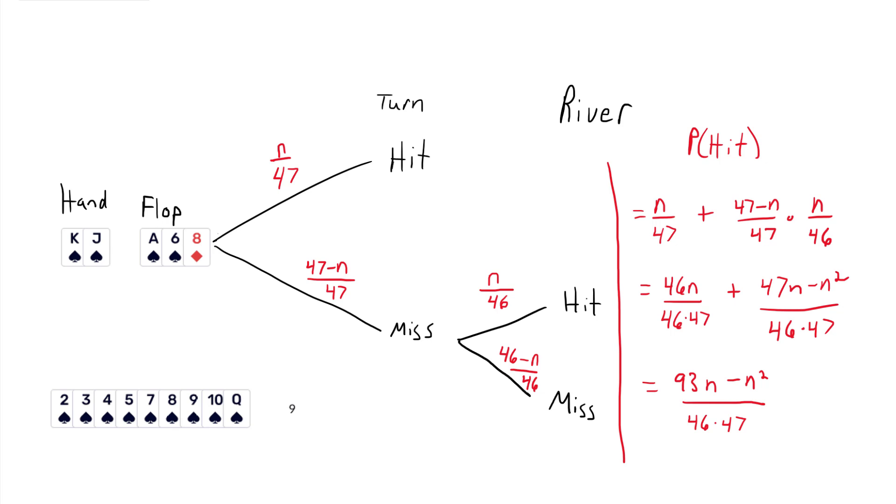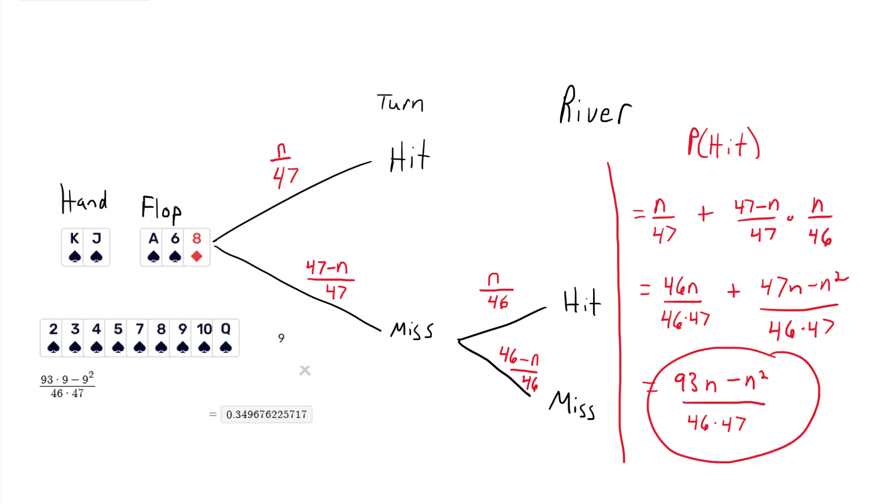So that's where the 2-4 rule comes in. It's essentially a linear approximation of a parabola. Let's just plug in N, which was nine in this case, into this equation. And when we do so, we get a probability of 34.97%, so roughly 35%. And the 2-4 rule says that if we have nine outs, it's the number of outs times four when we're on the flop. So here we have nine times four, which is 36%. So you see that 36% is very close to 35%. And we don't have time to do a quadratic evaluation in the game. We just want a rough rule that gives us close enough numbers so we can make educated bets given the pot odds.